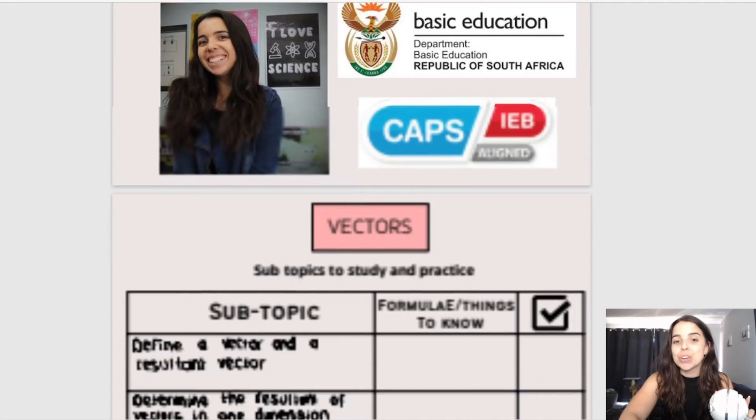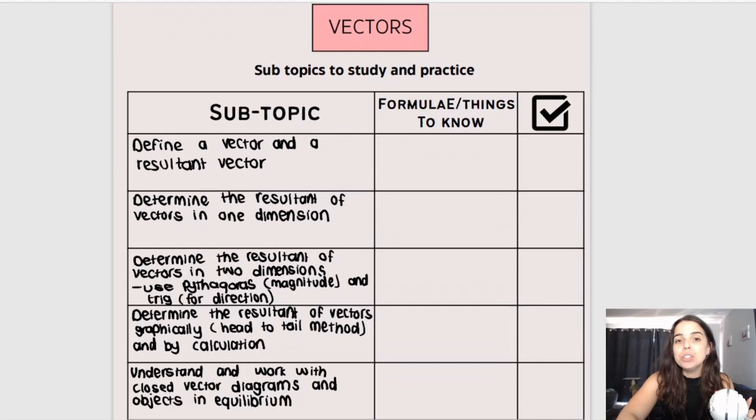Let's look at the first topic. So our first topic is called vectors. Now this is something that you did in grade 10 already. You need to be able to define a vector and a resultant vector. The calculations for vectors get a little bit more complicated in grade 11. So you need to be able to determine the resultant of vectors in one dimension.